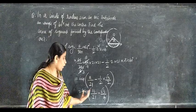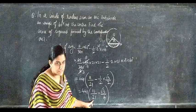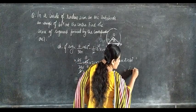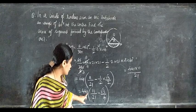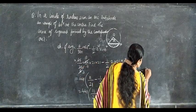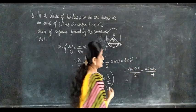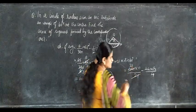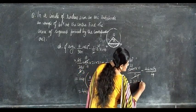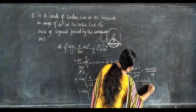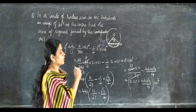We can open the bracket: 441 into 11 by 21 minus 441 into root 3 by 4. Cancel 21 into 441 — 21 times 21 — giving 21 into 11, which is 231, minus 441 root 3 by 4 centimeters square. So this is the area of the corresponding segment.